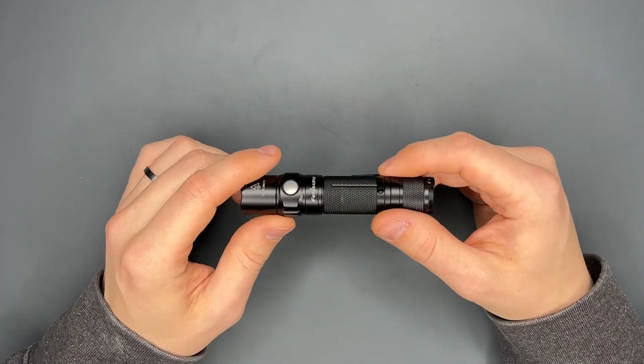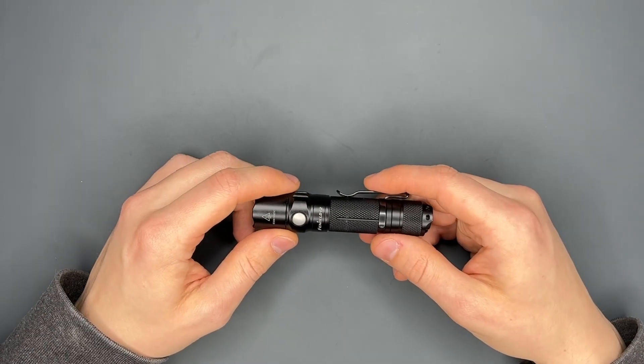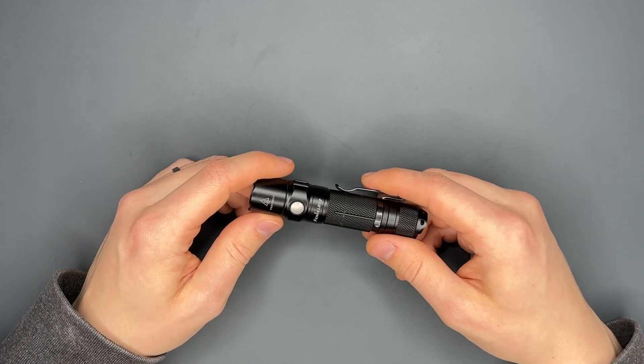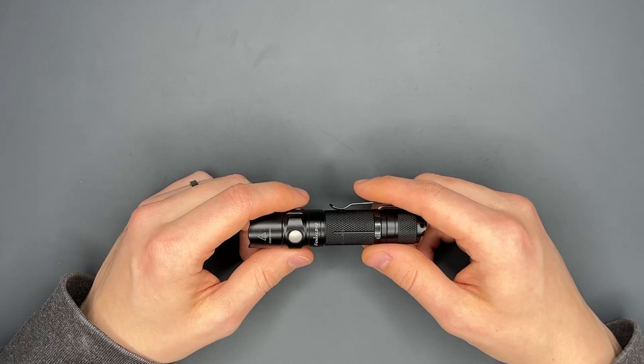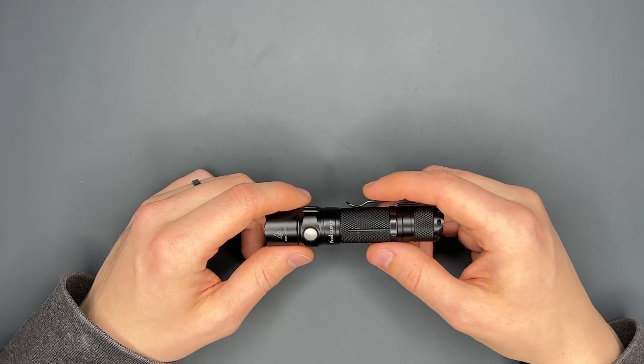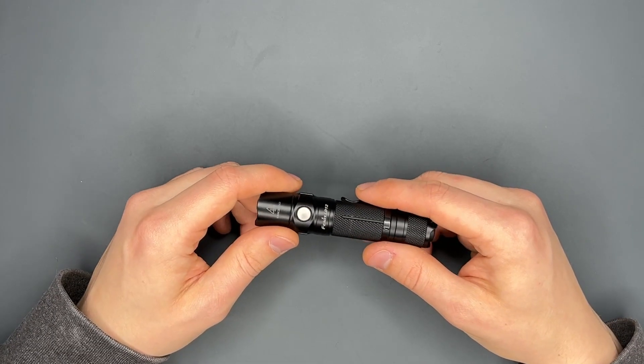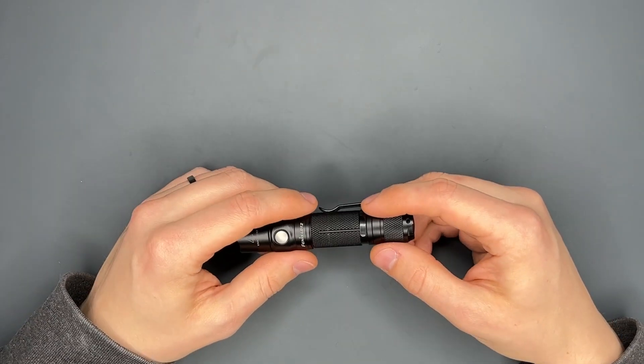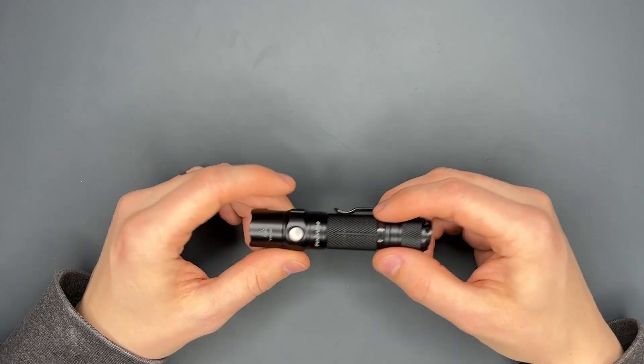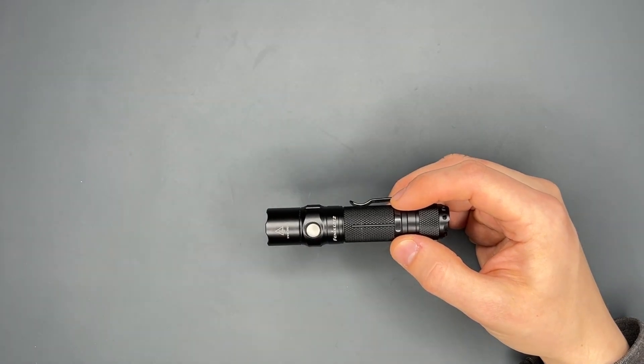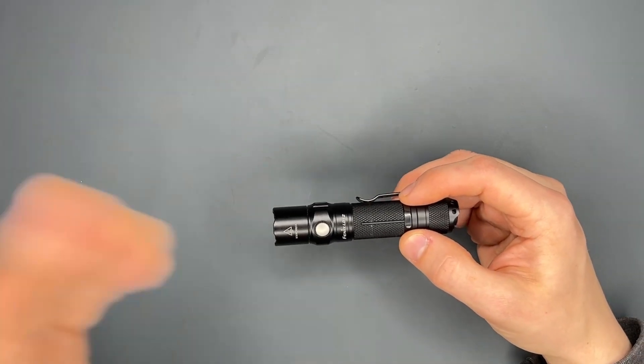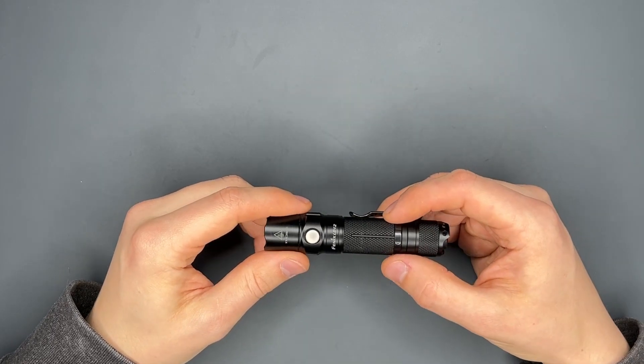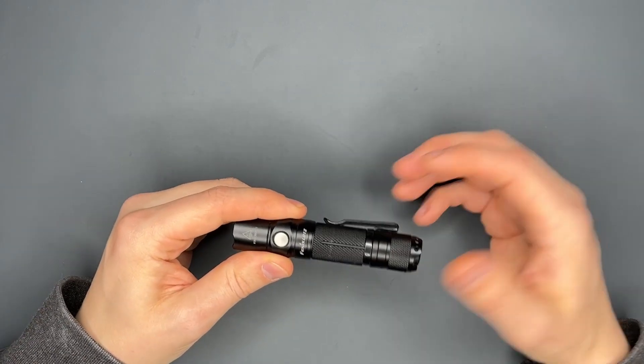This light is IP68 waterproof for up to two meters, which is quite nice and actually one of the reasons I bought it. I just wanted something that I can count on that keeps going. Another reason is it has different types of batteries, so I use it with rechargeable batteries so it doesn't cost me anything and I don't waste a lot of batteries.